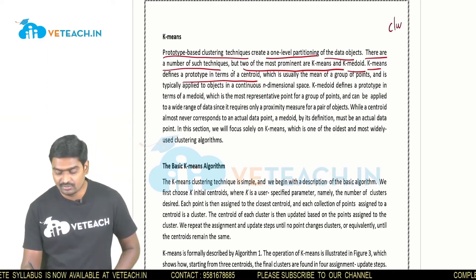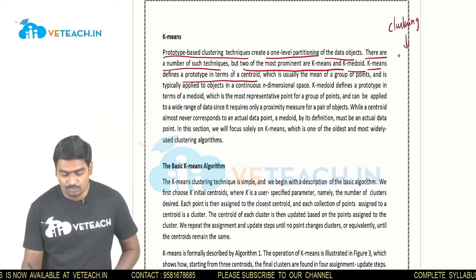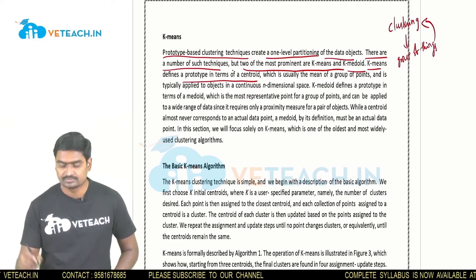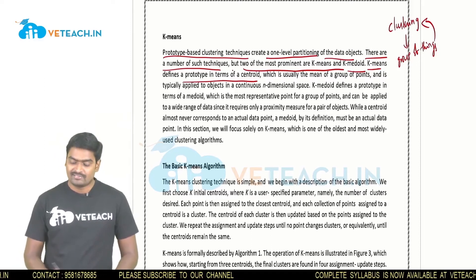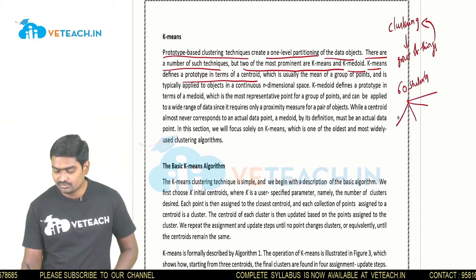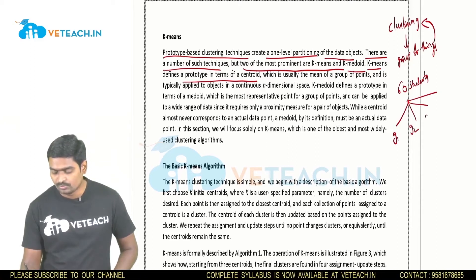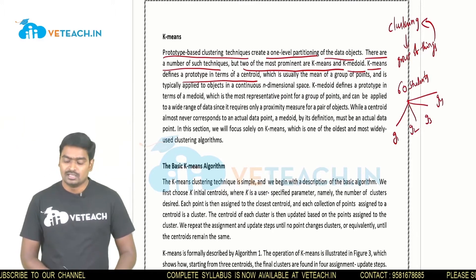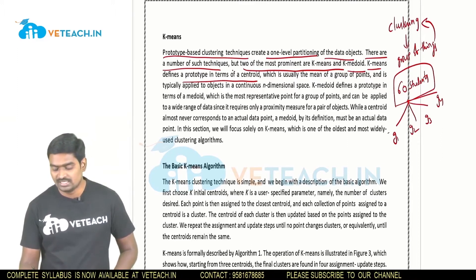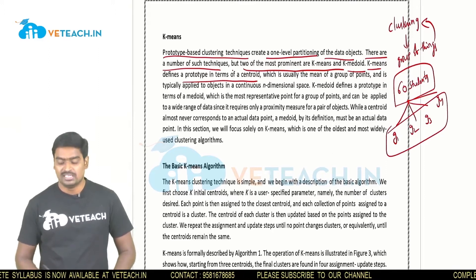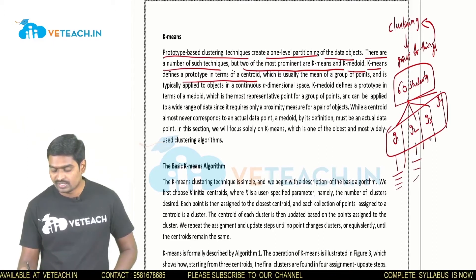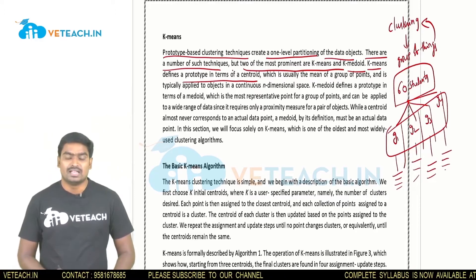Clustering means a group of things. For example, we have 60 students. These 60 students are divided into different groups: group 1, group 2, group 3, and group 4. These 60 students cannot all be taught by one teacher. In a college, different branches exist, and different students are in each branch — this is how we categorize students into groups.